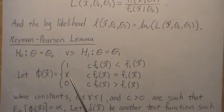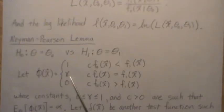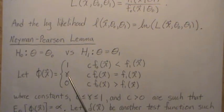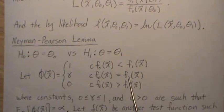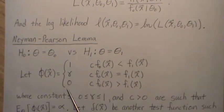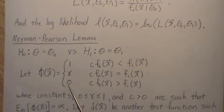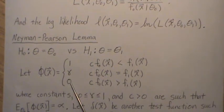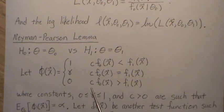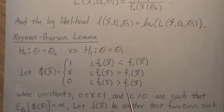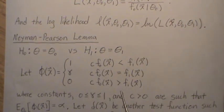Now gamma, being between zero and one, means we reject the null hypothesis with probability gamma if these two quantities are equal. And phi is zero, which means we accept the null hypothesis if this inequality holds.